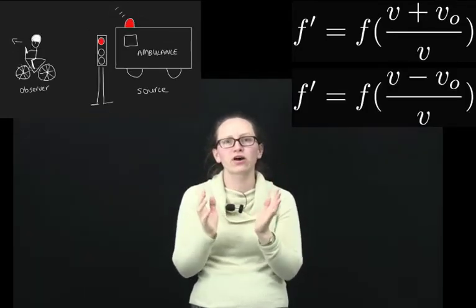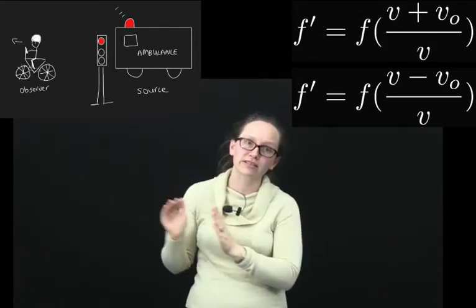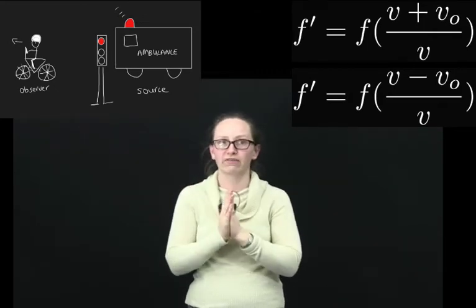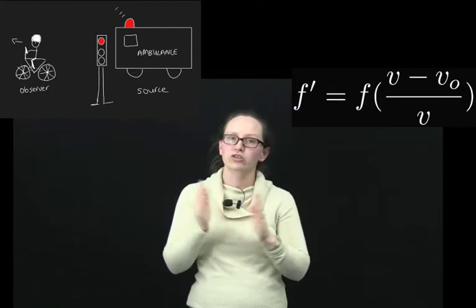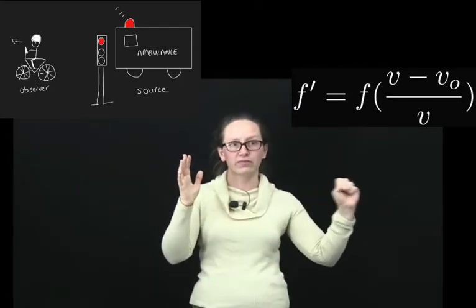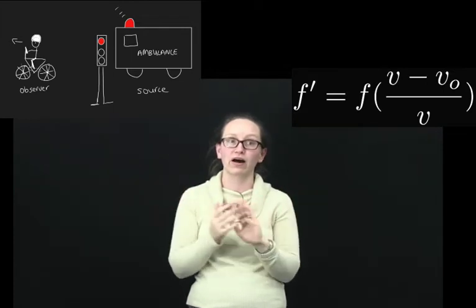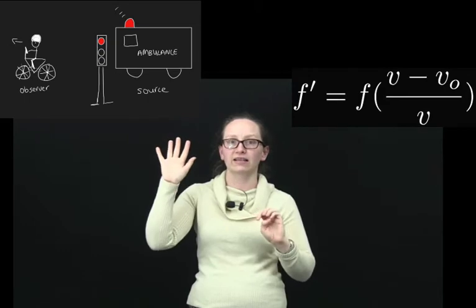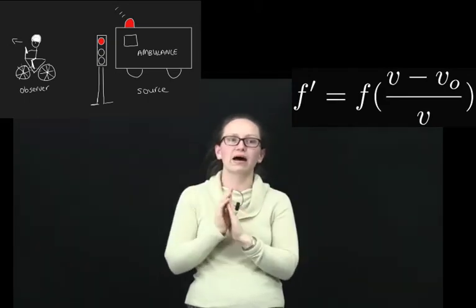If the observer is moving away from — or receding from — the source, instead of a positive sign in front of the velocity of the observer, we have a negative sign. So in the case where the observer is moving away from the source, the equation is: f dash = f × (v − v_o) / v.